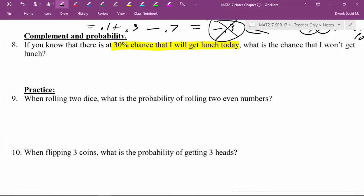You already know the answer to that question. If I tell you there's a 30% chance I will, you are hopefully sitting there saying there's a 70% chance you won't. How we're going to note that is the probability of me having lunch is 0.3. So what is the probability of me not having lunch? That would be the same as 1 minus the probability of me having lunch.